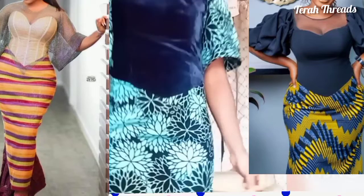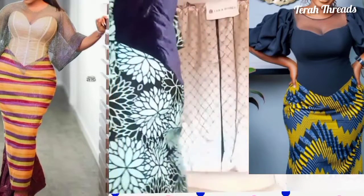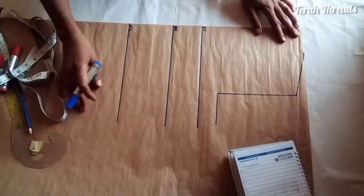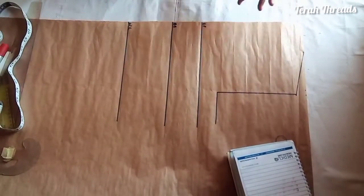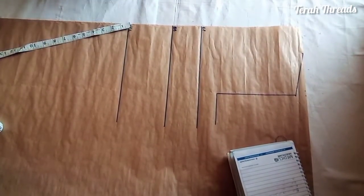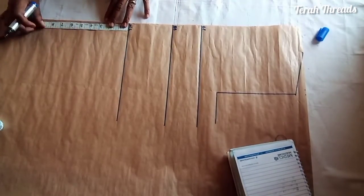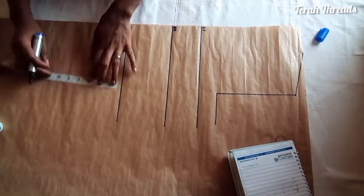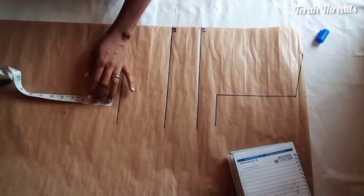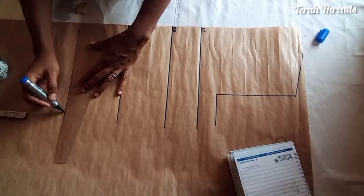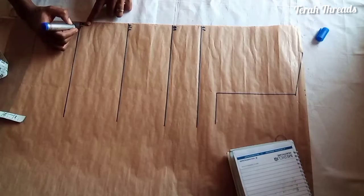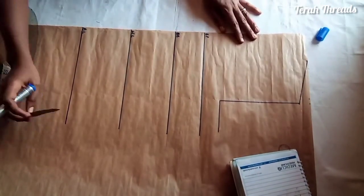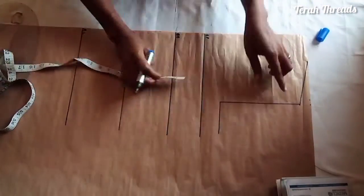I have my basic bodice here with the bust points, the under bust, and the waistline. To add a basque waistline, go down by at least five inches from your waistline. That's the line I just drew. We'll use this for the extension.